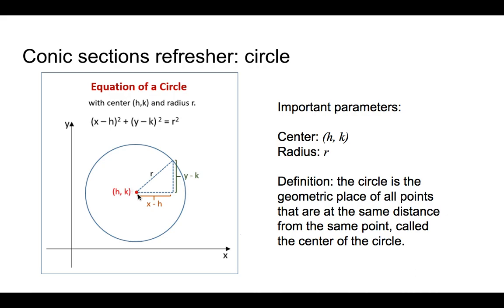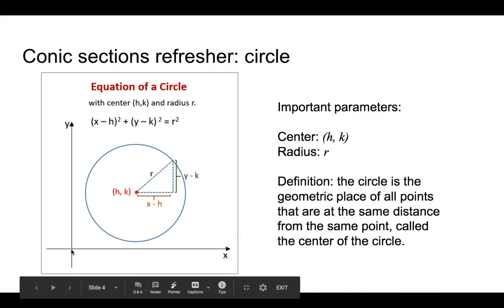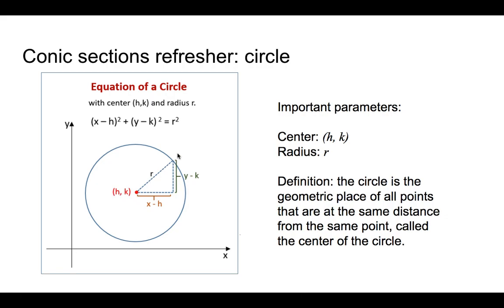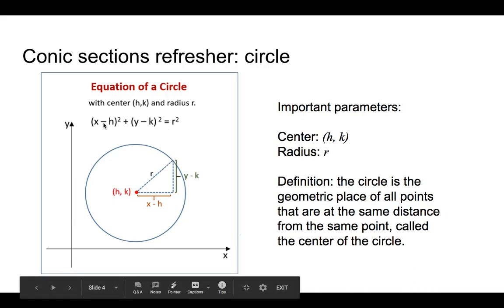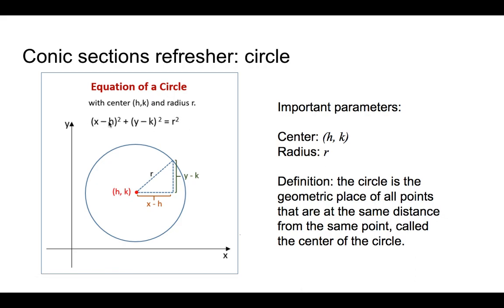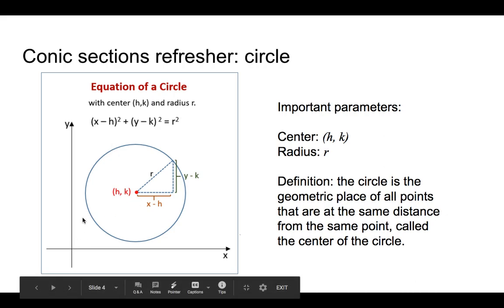So, circle. You know the circle well. It has a center. If it's not on the origin, it has coordinates h, k. And then it also has a radius. Those are just the two important parameters that make up the circle and appear on the equation. The equation looks like this: x minus, again, something if the center is not on the origin.